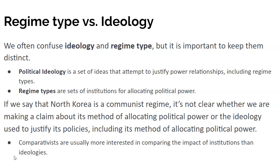They can be good or bad, but we're just looking at what the rules are for distributing political power. So if we say that North Korea is a communist regime, there's a little ambiguity — it's not clear whether we're making a claim about North Korea's method of allocating political power, or making a claim about the ideologies used to justify its policies. Is North Korea communist because all the people inside it believe in communism, or because a communist method of allocating political power is actually used? In empirical political science, we're more interested in the sets of rules — the regime types — than in the ideologies, but we have to be clear because not everybody makes that distinction quite so neatly.